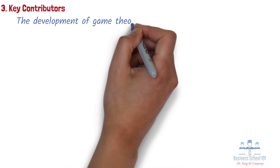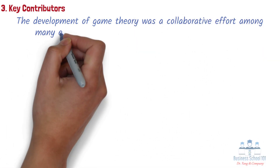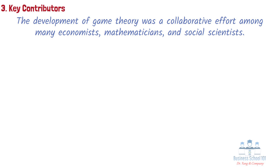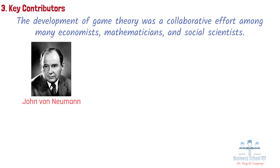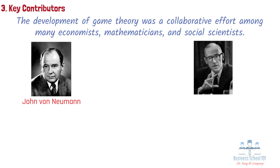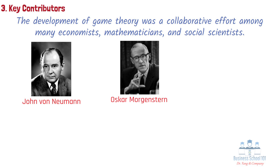The development of game theory was a collaborative effort among many economists, mathematicians, and social scientists. There are several key figures considered to be major contributors. First, John von Neumann, a Hungarian-American mathematician and physicist who made significant contributions to many fields including game theory, and is considered one of the founding fathers of the field. Second, Oskar Morgenstern, an Austrian-American economist who collaborated with von Neumann on the book Theory of Games and Economic Behavior, and is widely considered one of the pioneers of game theory.